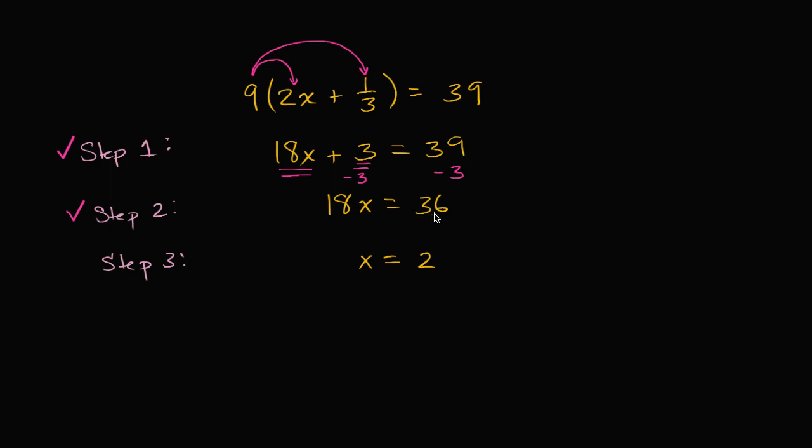And so you have 18x = 36. To solve for x, you would just want to divide both sides by 18. So you would get x = 36/18, or 2. So all of these steps check out. There's no problem here, no mistake. And you can verify that x does indeed equal 2.